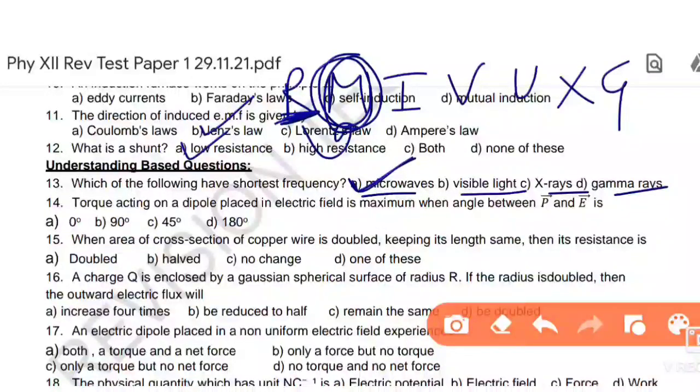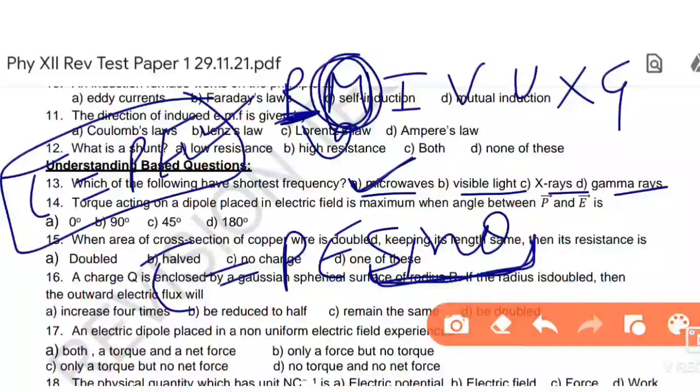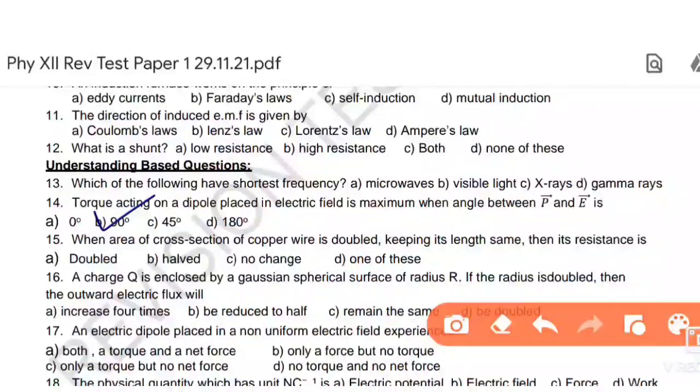Next, torque acting on a dipole placed in electric field is maximum when angle between P and E. Torque is P E sin theta. Maximum when sin theta value is 90 degrees. Sin 90 equals 1. When you multiply by 1 then P E is the answer. So 90 degree. Option number B is the right answer.